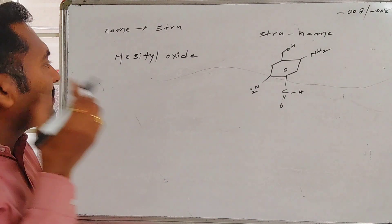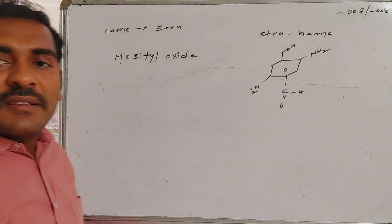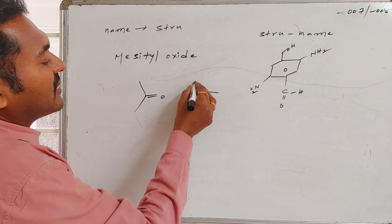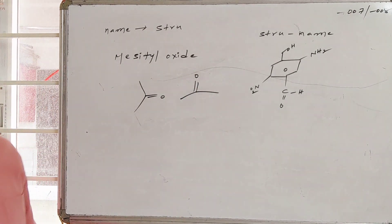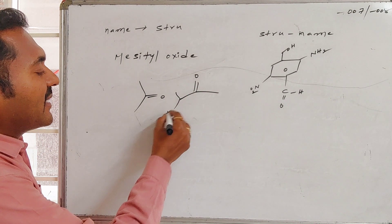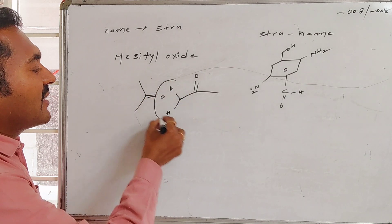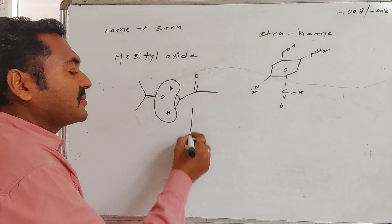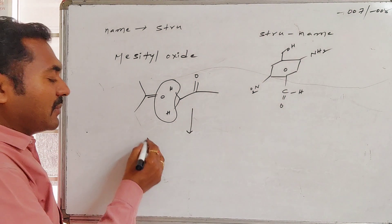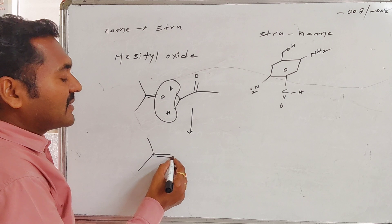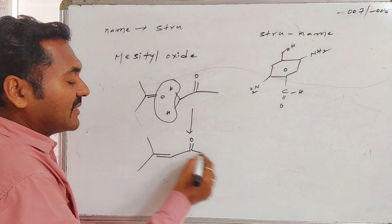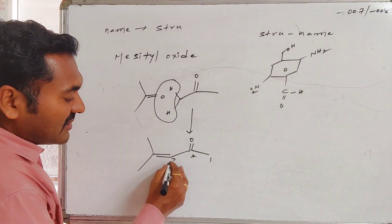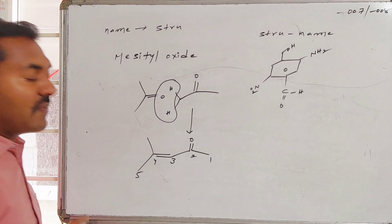For the first case, mesityl oxide is the aldol product of acetone. When acetone participates in an aldol reaction, the result of this aldol condensation is an enone system. This generated enone system is called mesityl oxide, and it appears as follows.